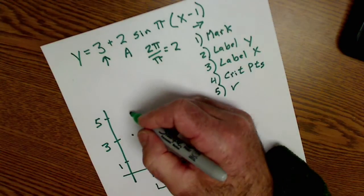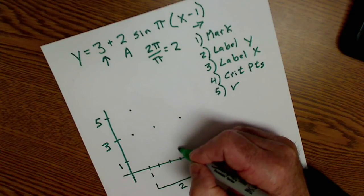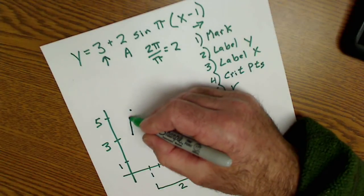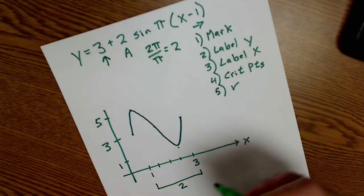At this quarter, it's at a high point. At this quarter, it's a low point. Connect the dots, and there's a sine graph.